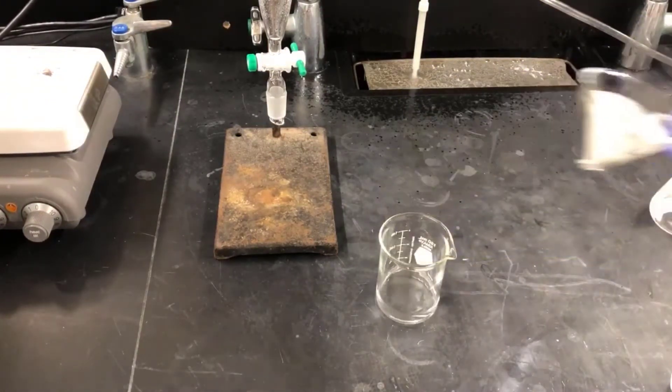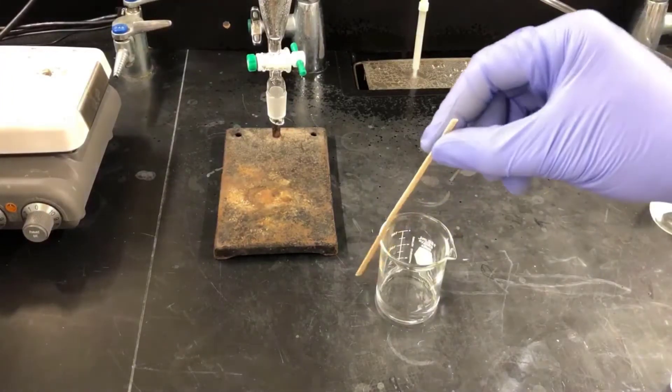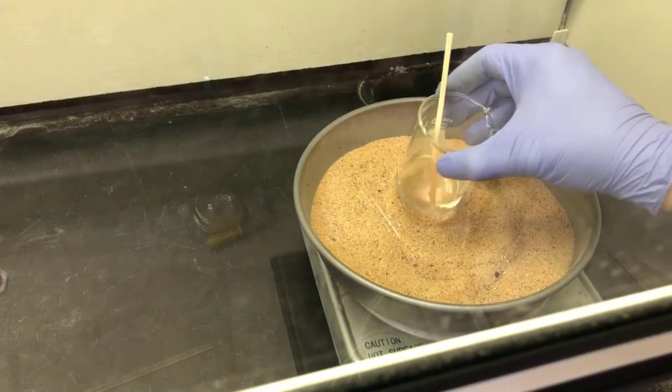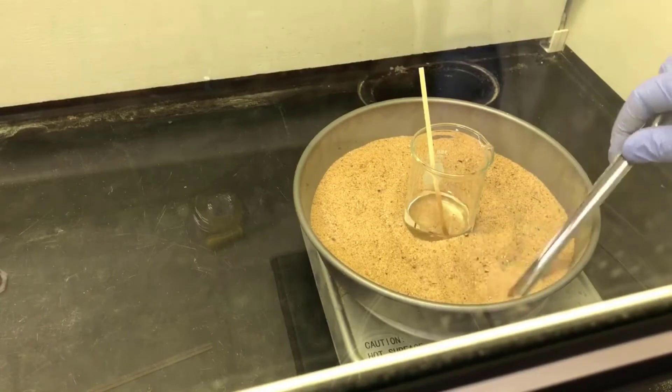Now I can remove and discard the filter paper with the magnesium sulfate, and I'll add a wooden stick to help smooth out the boiling in the next step. The next step is to evaporate the ethyl acetate and isolate solid caffeine. I'll do that by boiling it in a sand bath in the fume hood.